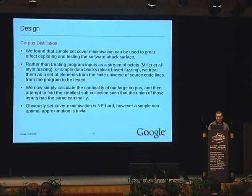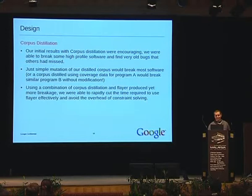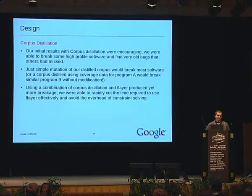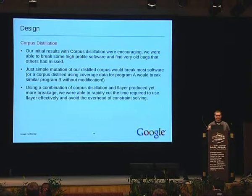My initial results were pretty encouraging. I was able to find lots of bugs and break some high-profile software that other people had already tried to fuzz and hadn't found anything. It was also the case that just simple mutation — flipping simple bits — would break most software. As each image was interesting because it touched some code that another image didn't, flipping random bits would hit nearby error paths that hadn't been touched before, and this would often expose software that could break pretty easily.